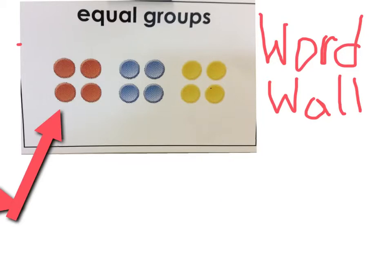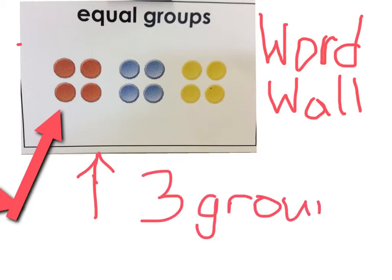You saw what that looks like. And as the example right up top there, they have three groups. They have three groups of four.